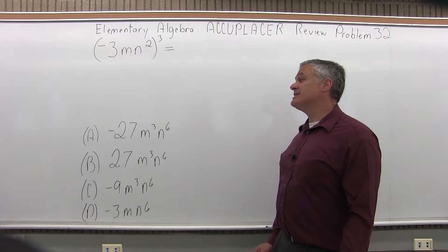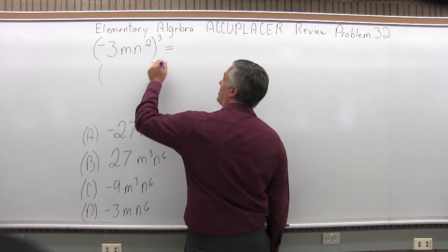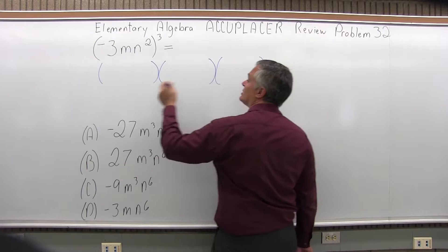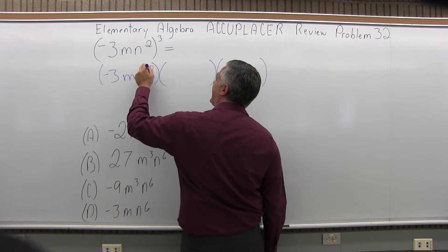So what you have is that stuff in parentheses times itself three times, you have three sets of parentheses multiplied together. And in each set of parentheses, you have negative 3, m to the first, n to the second.